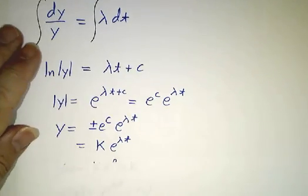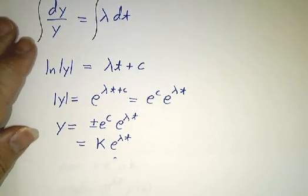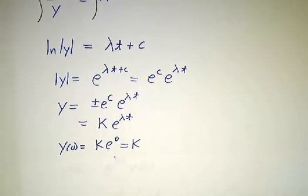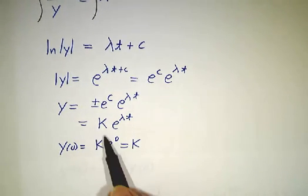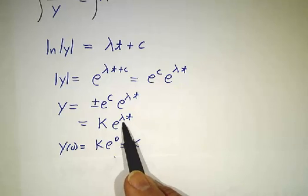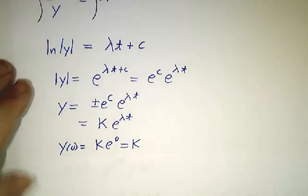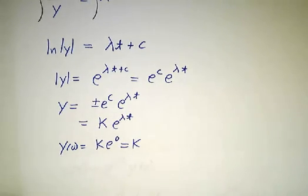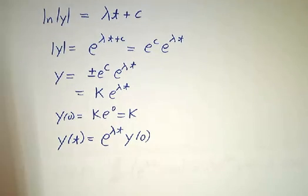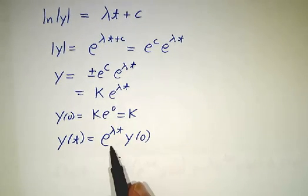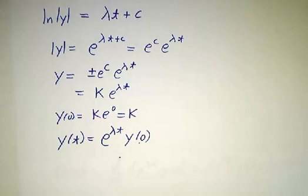But how do you figure out the constant? From the initial conditions. If you just plug in t equals 0, you get y = K e^0. In other words, K e^0, and that's K. Or to put it another way, K is y(0). So our solution is y = e^(lambda t) times y(0).